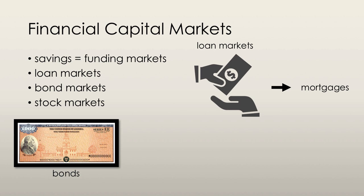A bond is a promise to make specified payments on specified dates. The buyer of a bond makes a loan to the institution and is entitled to the payments promised by the bond. A newly issued bond can be held until the borrower has repaid the entire amount, or the buyer can sell it to somebody else. Bonds are traded in the bond market. A mortgage-backed security entitles its holder to the income from a package of mortgages. Lenders like banks can sell these packages so they can issue more loans. The holder receives payments derived from the mortgage borrower's payments.